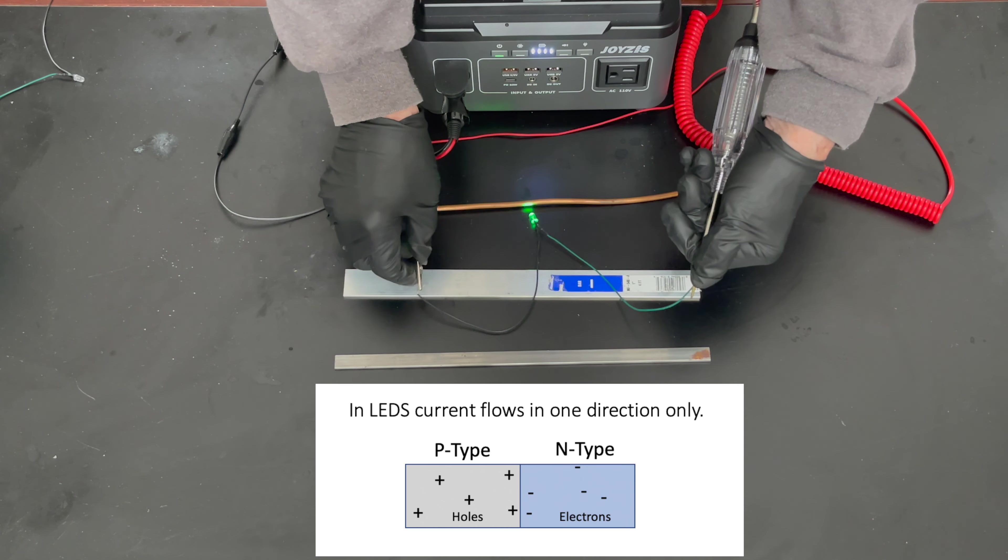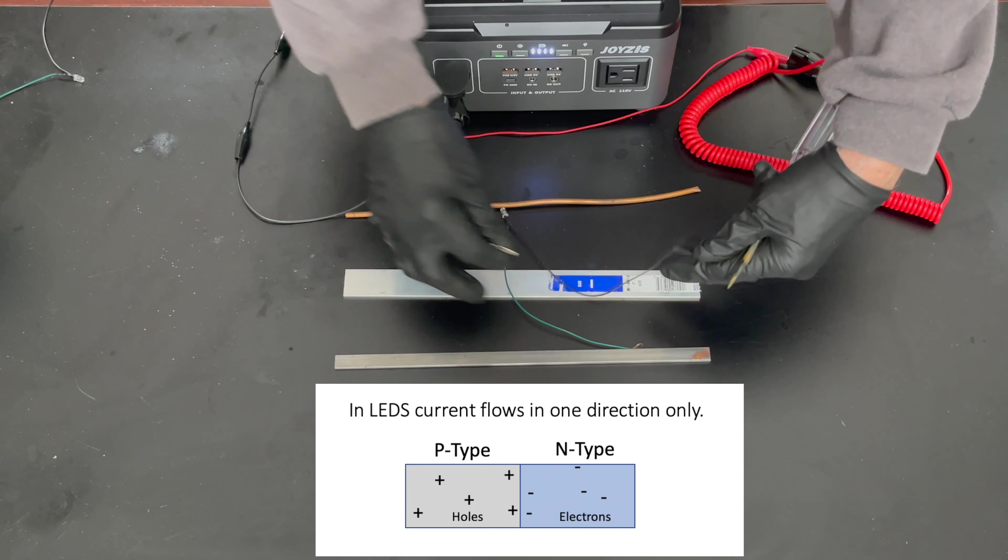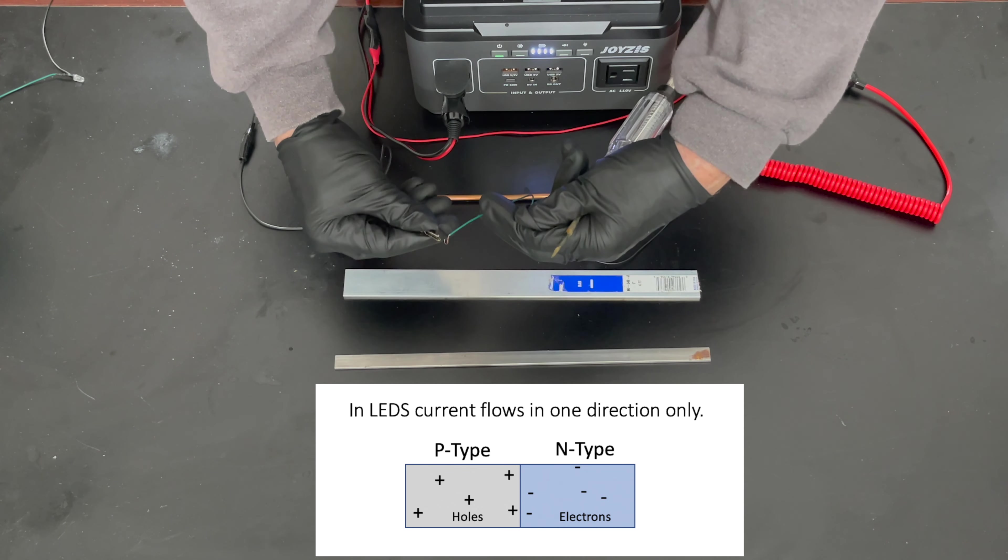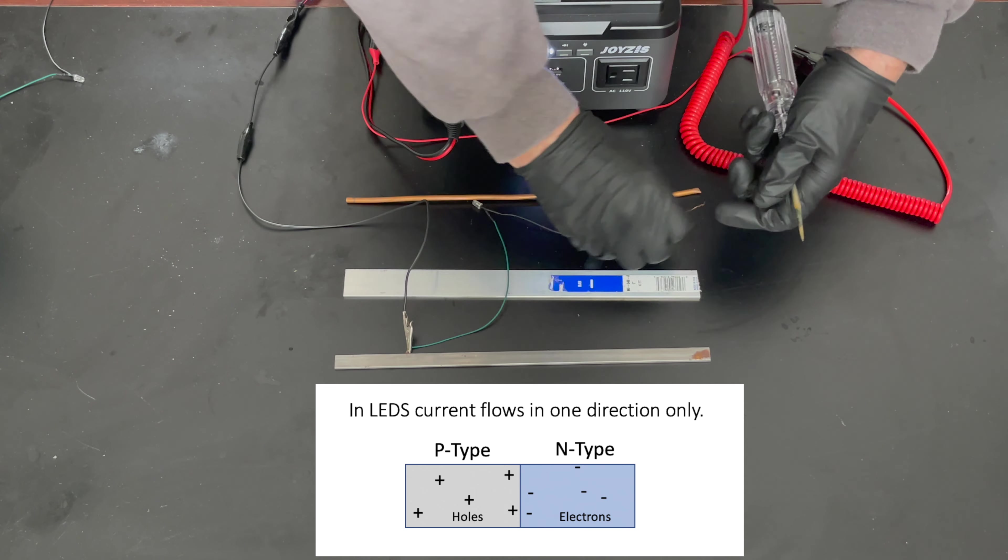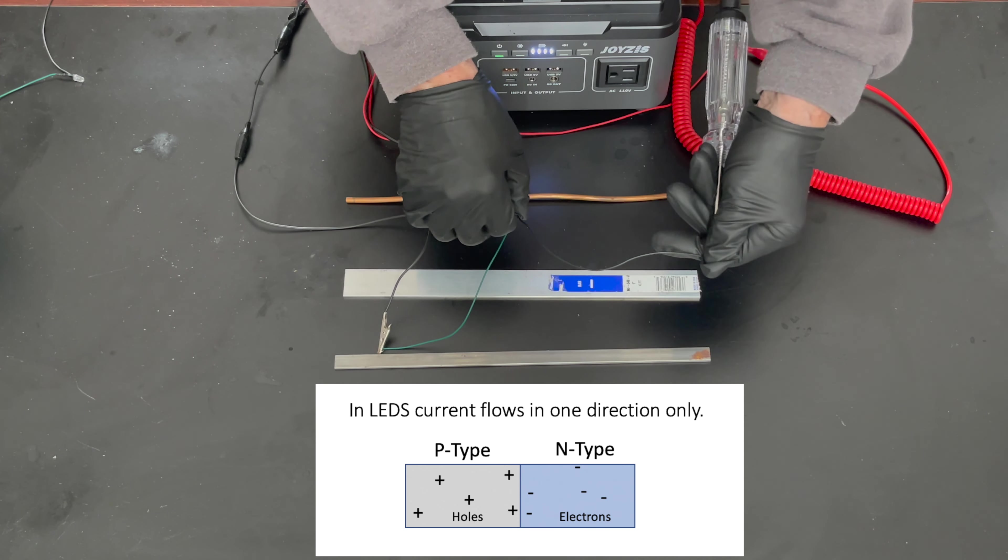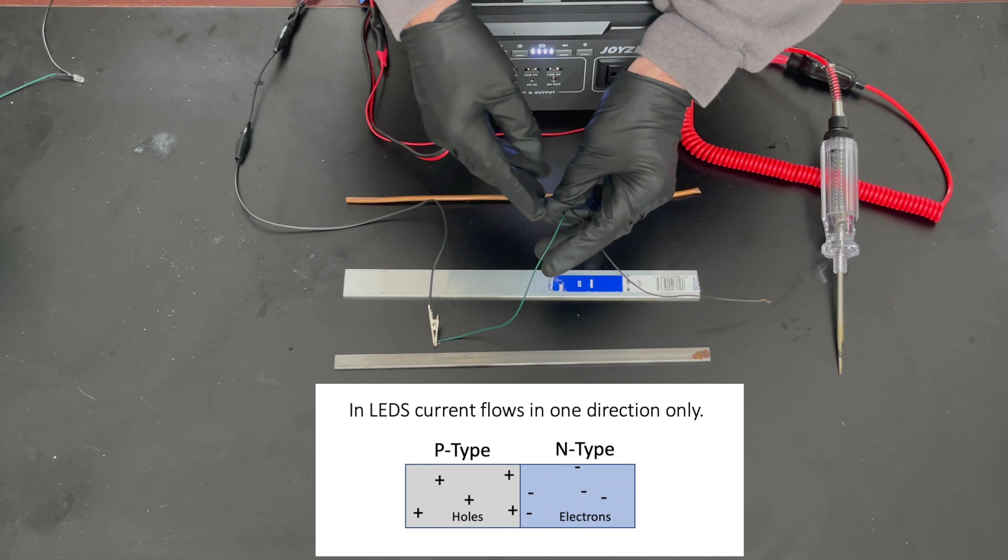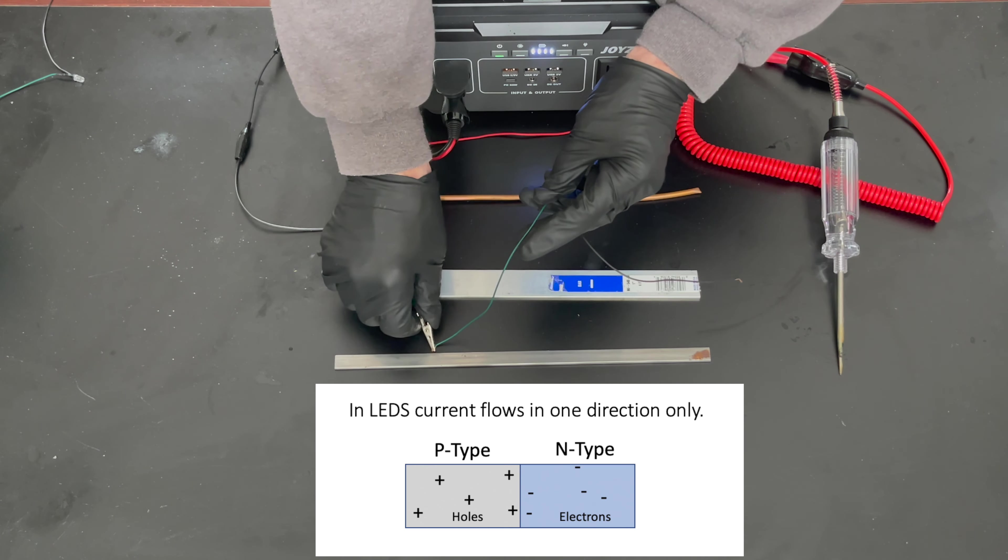So now, if we reverse these leads, switch this around. So we put our negative over here on the green side. The positive here, nothing. This doesn't light. That's because this has a positive-negative junction there. It only allows current to flow in one direction, like any diode.